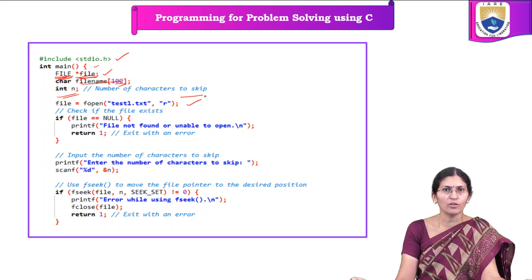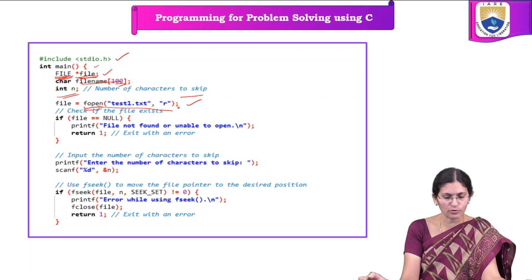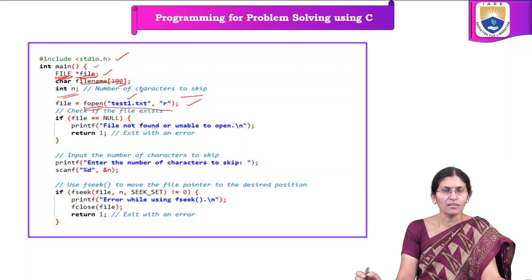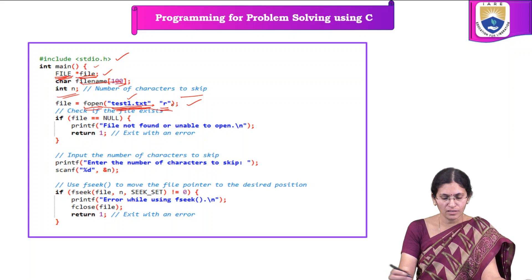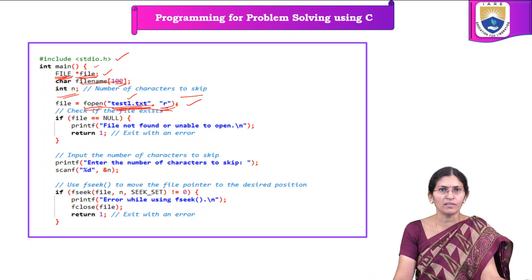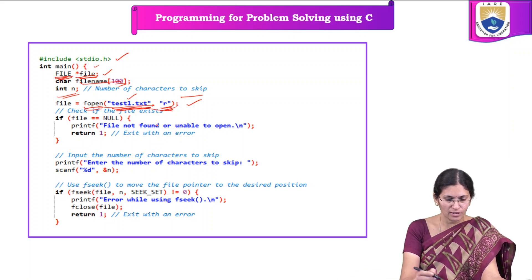The first step to read data from the file is to open it. The function to open a file is fopen. By using fopen, it takes the path of the file — if the file is in the same directory, no need to mention the full path, just write the file name. The second parameter is the mode: 'r' specifies read mode, meaning we are opening the file only for reading. The return value is assigned to the file pointer.